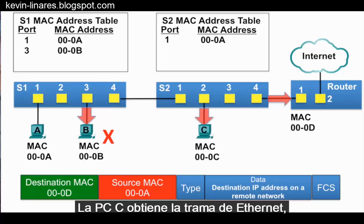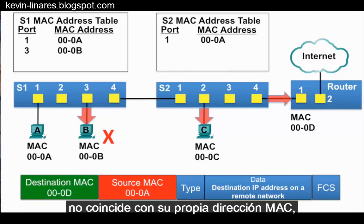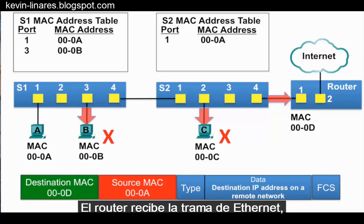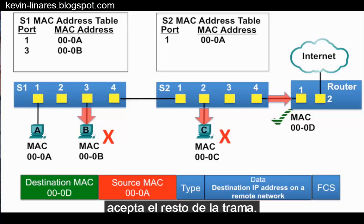PCC gets the Ethernet frame, and because the destination MAC address does not match its own MAC address, it does not accept the rest of the Ethernet frame. The router receives the Ethernet frame, and because the destination MAC address does match its own MAC address, it accepts the rest of the frame.